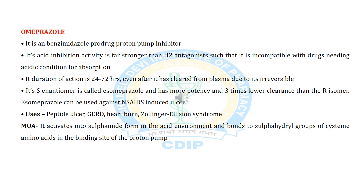Omeprazole is a benzimidazole prodrug proton pump inhibitor. Its acid inhibition activity is far stronger than H2 antagonists, such that it is incompatible with drugs needing acidic conditions for absorption. Its duration of action is 24 to 72 hours even after it has cleared from plasma, due to its irreversible binding. Its enantiomer is called esomeprazole, which has more potency and 3 times lower clearance than the R isomer. Esomeprazole can be used against NSAID-induced ulcer. Uses include peptic ulcer, GERD, heartburn, and Zollinger-Ellison syndrome. It activates into sulfenamide form in an acidic environment and binds to the sulfhydryl group of cysteine amino acid at the binding site of the proton pump.